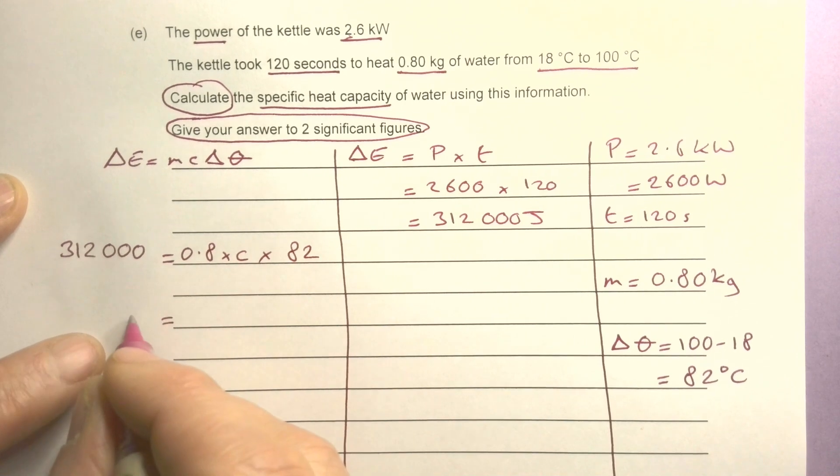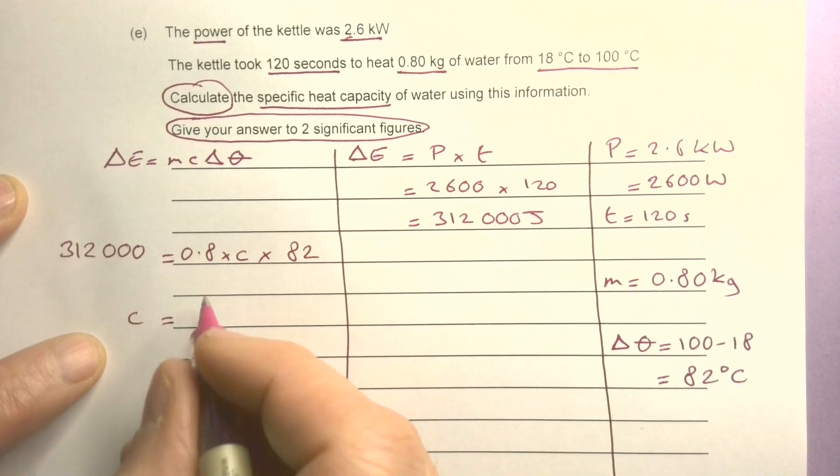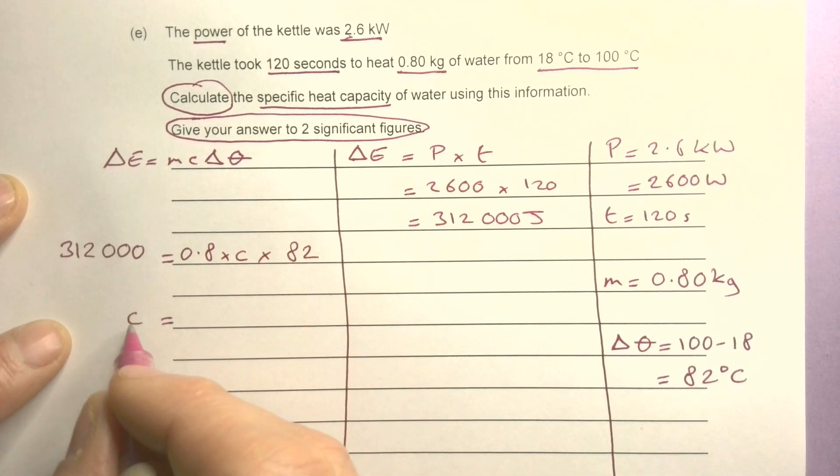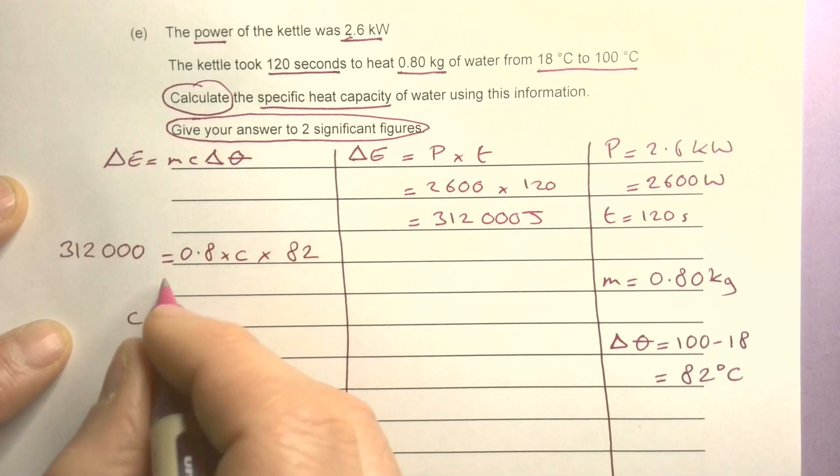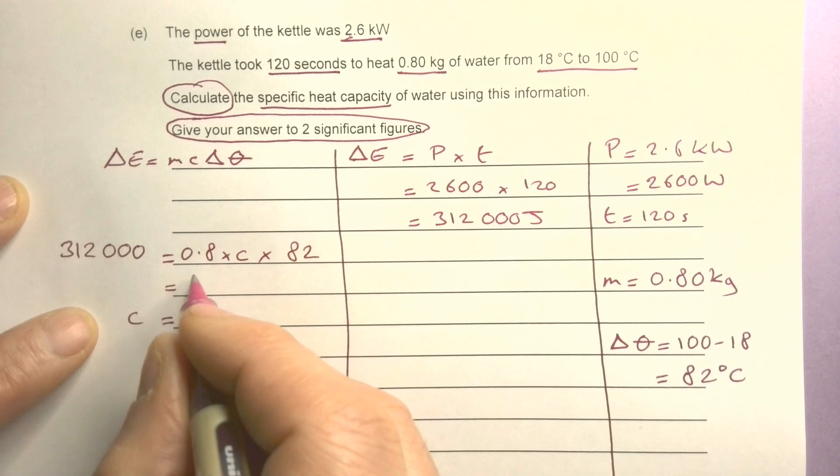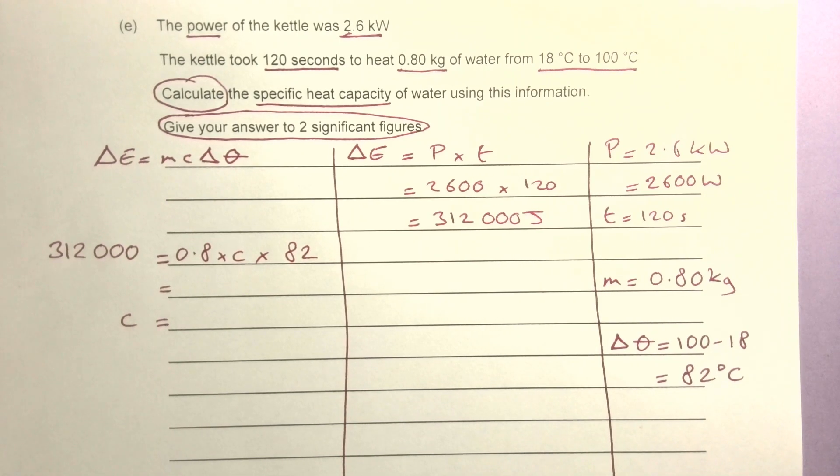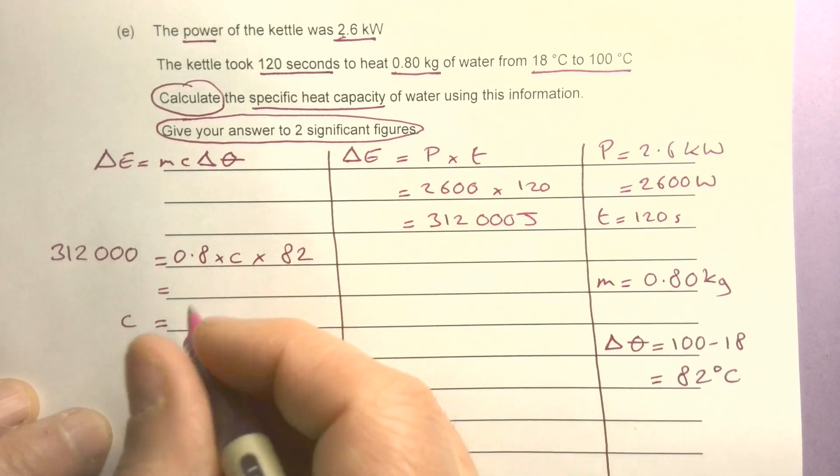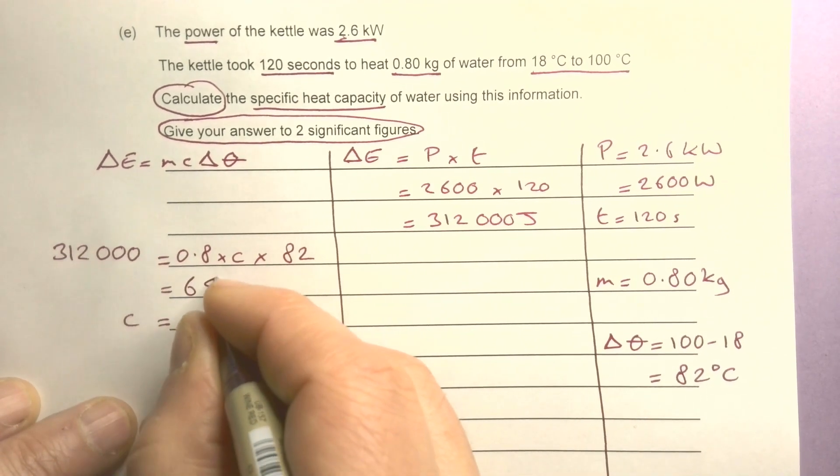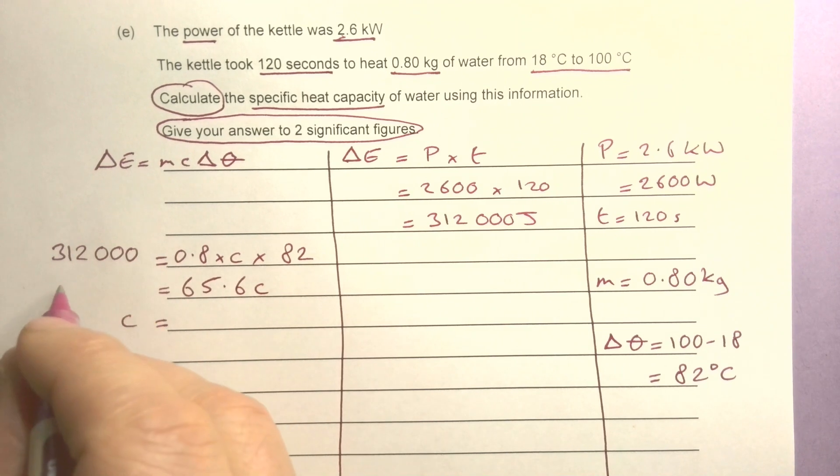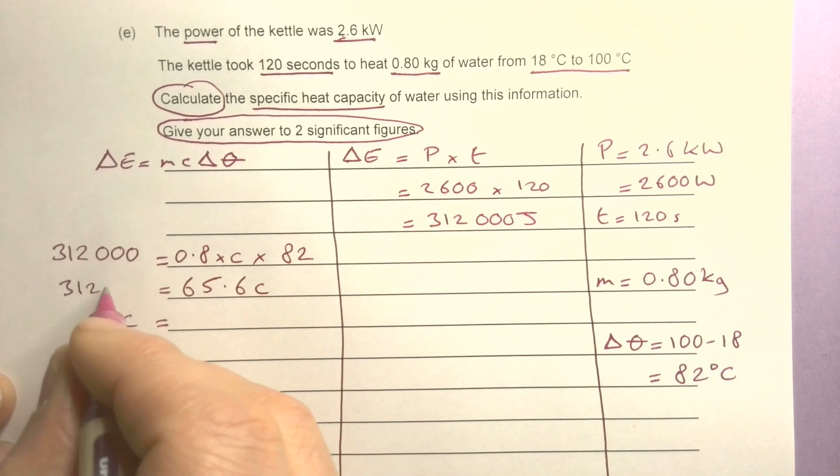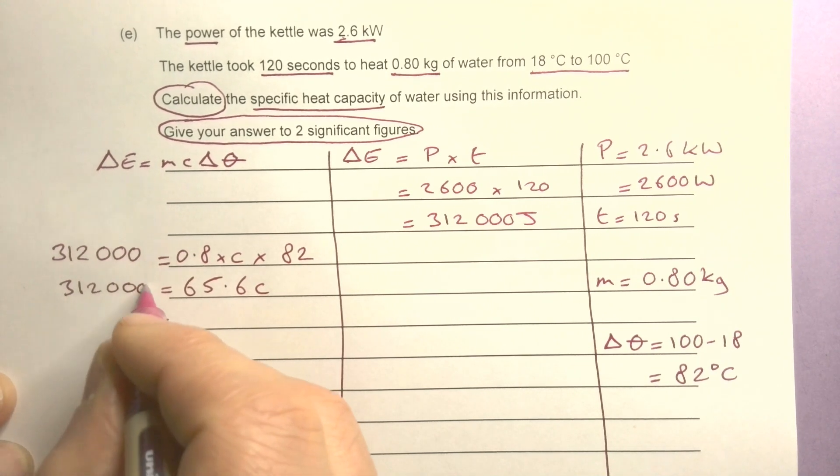So c equals... let me just put an extra line in there. 0.8 times 82 - what's that? 0.8 times 82 equals 65.6c.